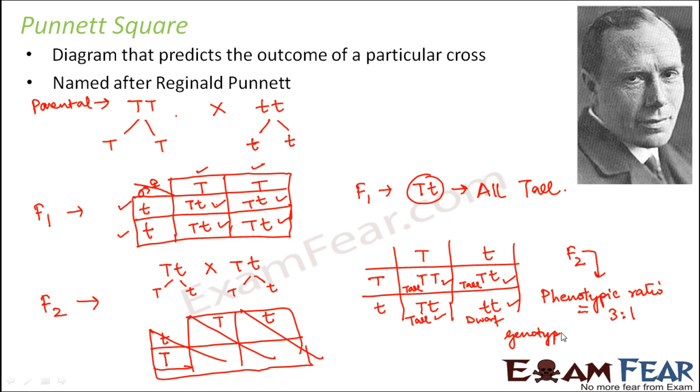Similarly, you can find out the genotypic ratio looking at the outcomes from the Punnett square. That is capital T capital T is to capital T small t is to small t small t, which is equal to 1 is to 2 is to 1.